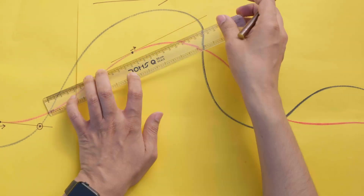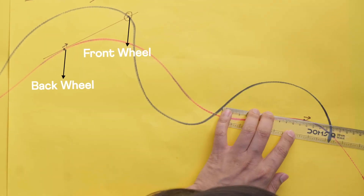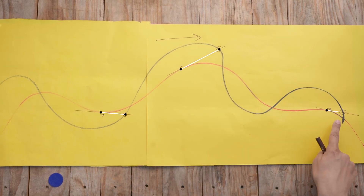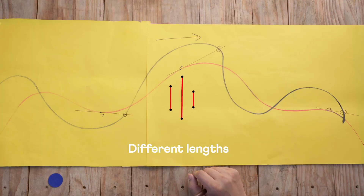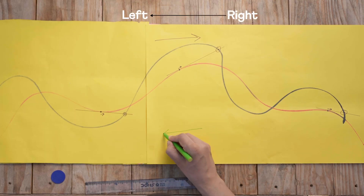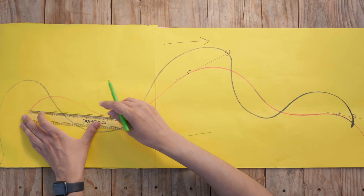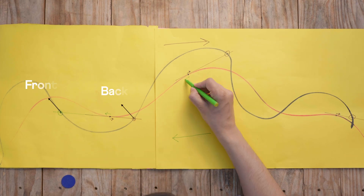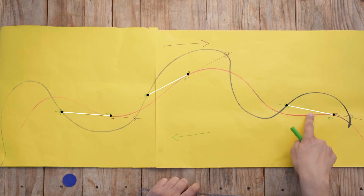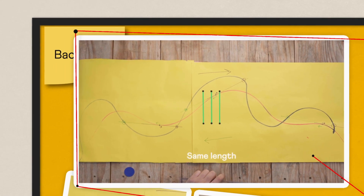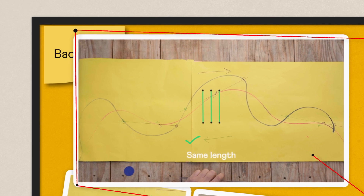Next, we do this a couple more times for different positions of the back wheel. Now take a look at these segments — all are of different lengths. That's not possible, since the distance between the two wheels should remain the same. So this can't be the direction in which the bike is moving. Let's do this for the opposite direction. Draw the tangent line and locate the front wheel, repeating a couple more times. Measure the three lengths — this time, they're all the same, as they should be. So this is the direction in which the bike was moving.